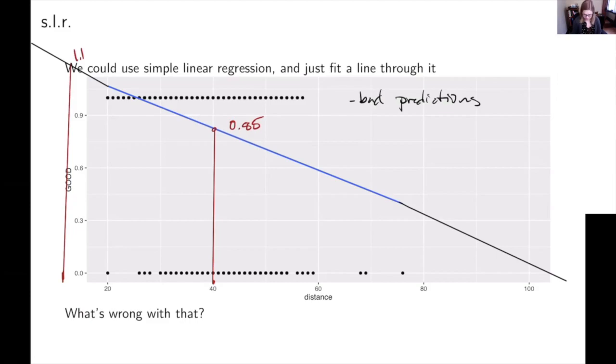And then I guess I don't remember how long a football field is in yards, but if you were really far away, then we would guess that you kind of negative made it, that you really, really didn't make it. So the predictions can go outside 0, 1. So that's a bad thing as well.